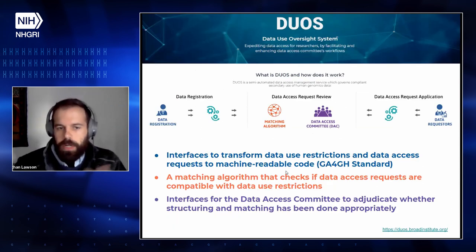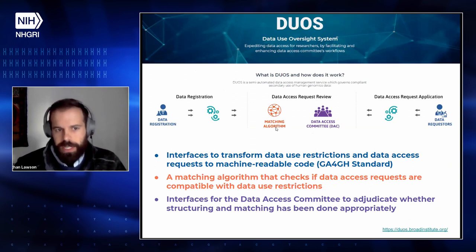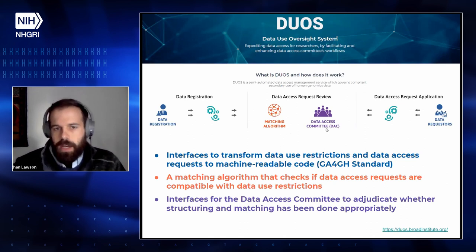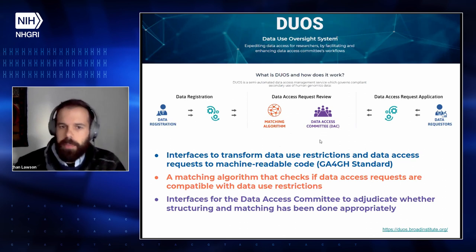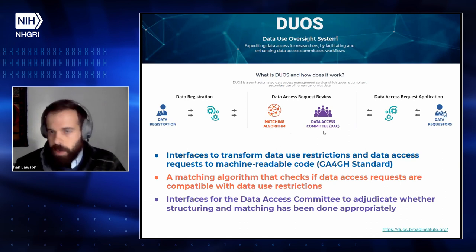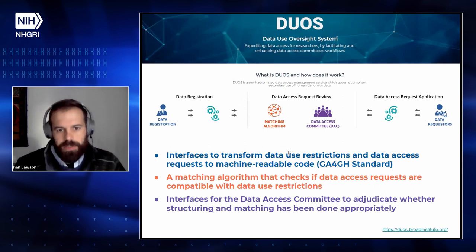Another thing we really want to work on is helping the data access committee with their decision. Particularly at the Broad, we've developed a software called DUOS — the Data Use Oversight System. What DUOS intends to do is take the Data Use Ontology and code the data use terms in consent forms and data access requests with Data Use Ontology terms, so they can be compared in an apples-to-apples way by the data access committee. On top of that, since those data use terms and data access requests are both in the same computer-readable language, we have a DUOS matching algorithm, which provides a suggested decision on the data access request to the data access committee — which they're welcome to use or not — and we're continuing to iterate that as we pilot DUOS at the Broad and with NHGRI and colleagues throughout NIH.